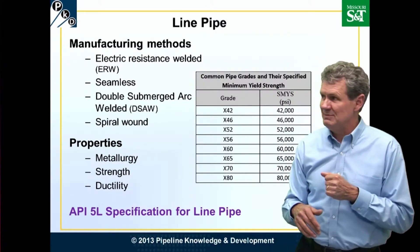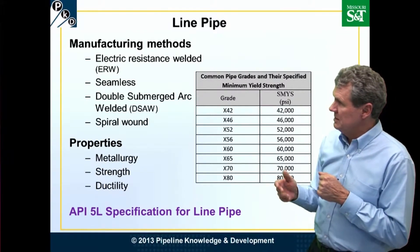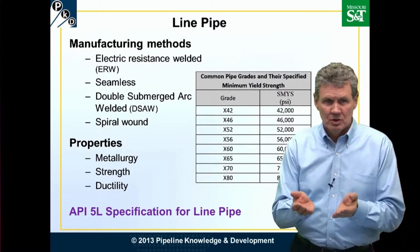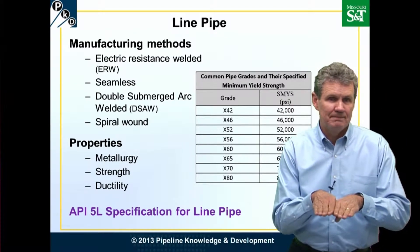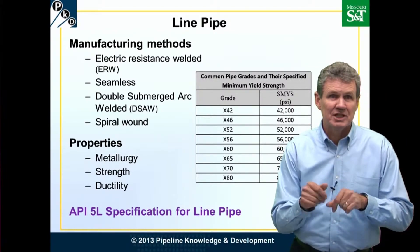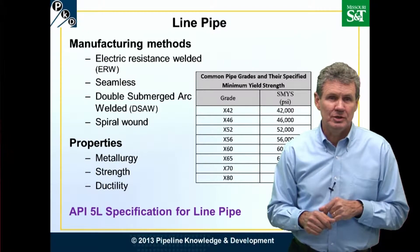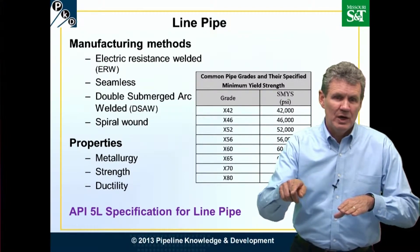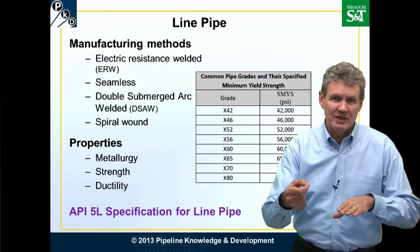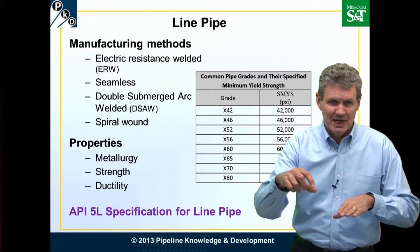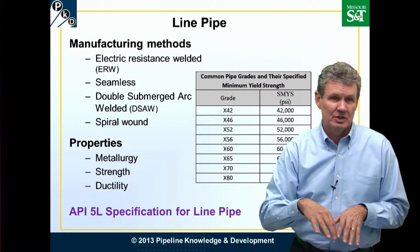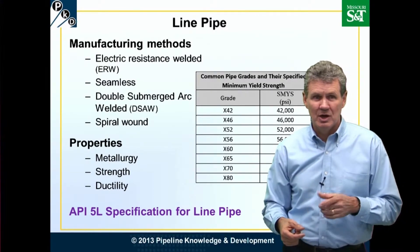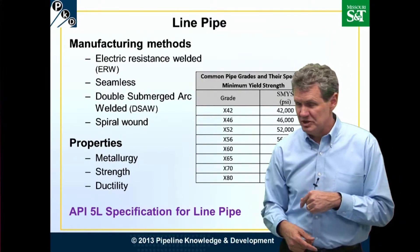The second type is seamless pipe, which we've already discussed. Then there's double submerged arc weld, or DSAW pipe. Again, we fold it up, but instead of electrical current, we pass the pipe through a welding machine and weld both the inside and the outside of the pipe, actually putting in a filler material — steel on a welding reel that is unwound.